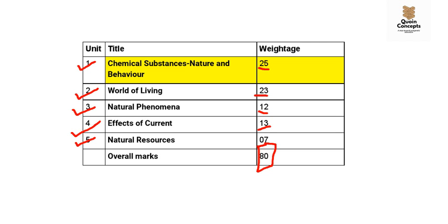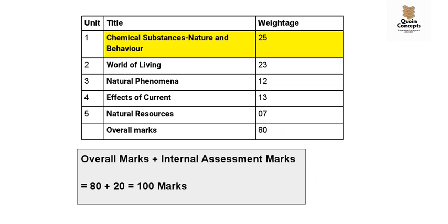There are also 20 marks for internal assessment, which is assessed based on your school performance — unit tests and so on. This varies from school to school; some teachers take more than one test and average the marks. So the internal assessment is out of 20, the board examination is out of 80, and the overall total is 100 marks.